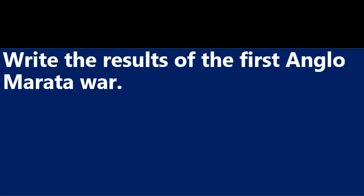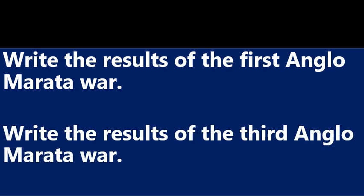Write the results of the First Anglo-Maratha War and the Third Anglo-Maratha War. The First Anglo-Maratha War ends with the Treaty of Salbai. Madhavarao second was considered as Peshwar. Ragoba got pension and the British got Allahabad. In the Third Anglo-Maratha War, Bajirao was given pension, his title of Peshwar was snatched away, and Shivaji's successor Pratapasimha was given a small state called Satara.